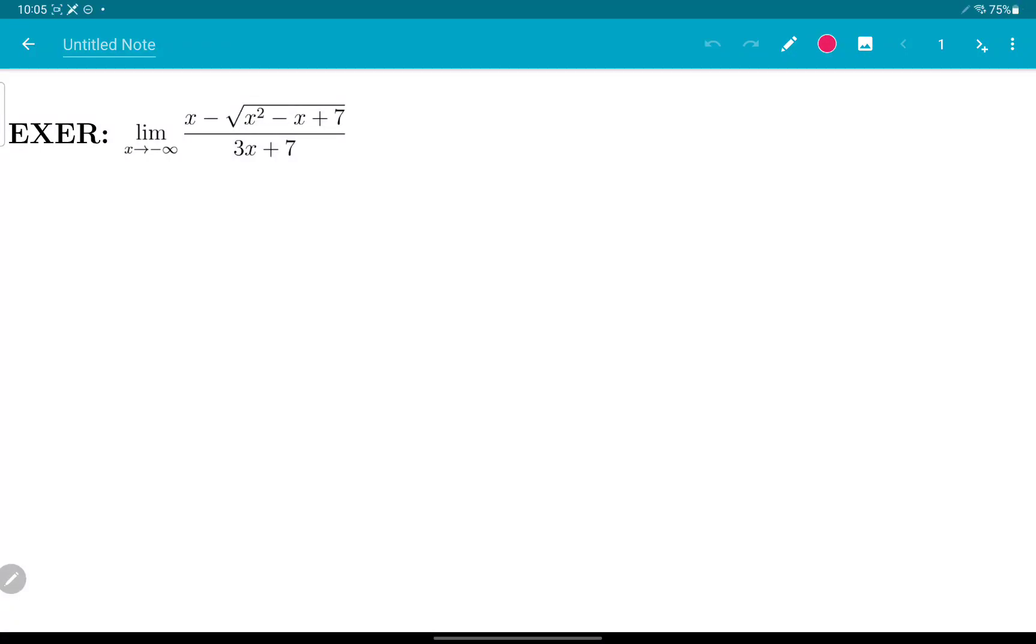Okay, give this one a try. I'll give you a hint. The hint is x is less than zero since x is going to minus infinity, so the square root of x squared is negative x.